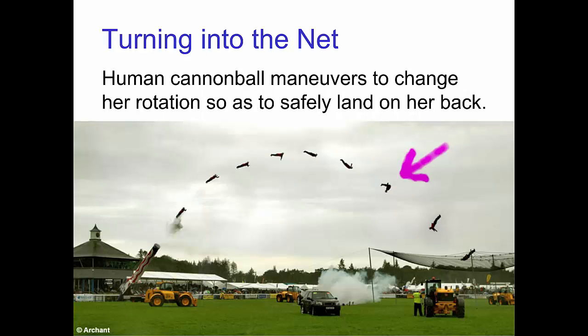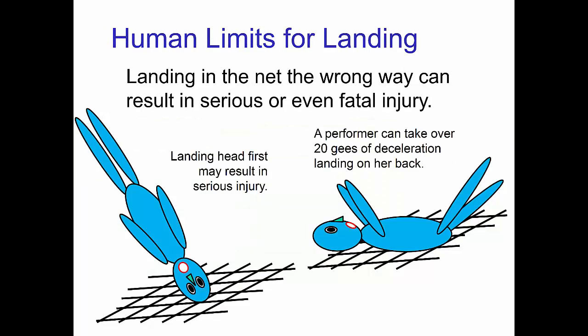Now you may notice that for these kinds of extreme jumps, the performer landing in a net will try to land on her back. Here you see that the performer in the air does a maneuver to rotate the body so that she lands with her back to the net. Now there's a good reason for this turning maneuver.